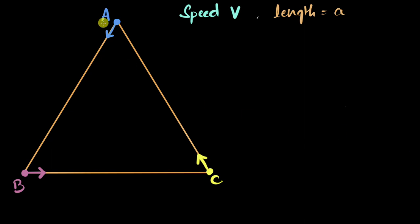Here's the question. If these people are always pointing towards each other, if A is always running towards B, B is always running towards C, and C is always running towards A, after how long do they meet? We can assume that they start running together at time t equal to zero. The question then is, after how long would they meet?